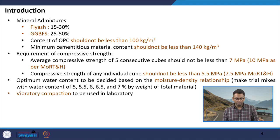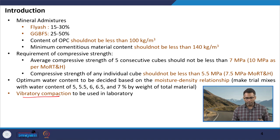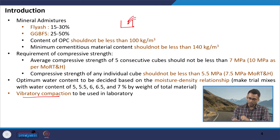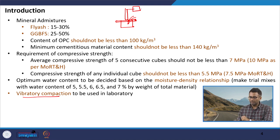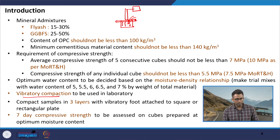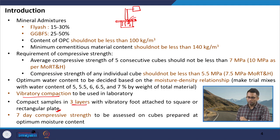In the lab, vibratory compaction is used to make DLC samples, which mirrors field practice where a vibratory compactor is used. A cubical mold is filled in several layers, a plate is placed on top, and a needle vibrator is used to vibrate each layer so the material settles into a dense mass. Compaction is done in three layers with a vibratory foot attached to a square or rectangular plate.